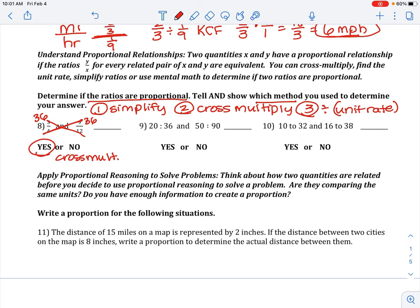For number 9, 20 over 36, 50 over 90. Let's divide to find our unit rates. 20 divided by 36 gives us a 0.5 repeating unit rate. 50 divided by 90 gives us 0.5 repeating. So, yes, those are proportional because they have the same unit rate. And that's the method we did on that.